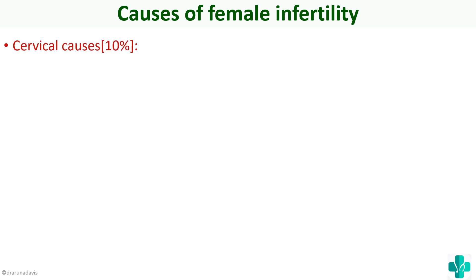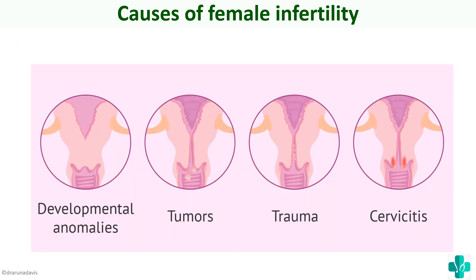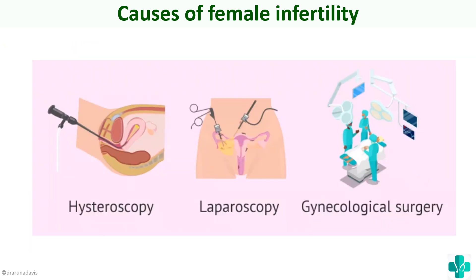Cervical causes of female infertility include developmental anomalies, tumors, trauma, and cervicitis — all of which can cause failure of implantation or failure to provide an environment conducive for sperm entry. Developmental anomalies, tumors at the cervical wall, trauma, and cervicitis all prevent proper fertilization and implantation.